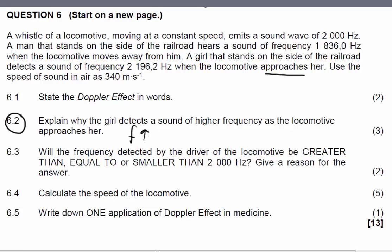If we then look at question 6.3, will the frequency detected by the driver be greater than, equal to, or smaller than 2000 Hz? The reason for this is because the driver of the locomotive is going to be at rest, or move at a velocity of 0 m per second relative to the source of the sound. Therefore, no relative motion between the train driver and the locomotive.